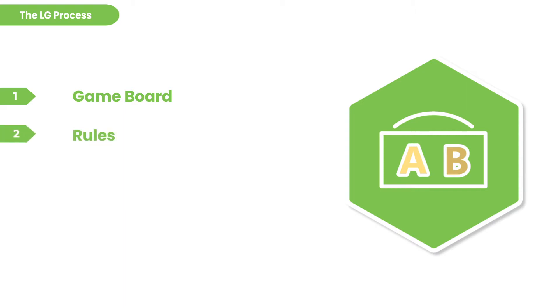What's the game board going to look like that's going to help you create hypotheticals and track the information? Then slowly and carefully, you want to notate the rules in a consistent manner using the same notation each and every time. Then you want to pause and look back through the rules, double check them, make sure you have them correct, and look for connections between them that allow you to make inferences — things that must be true under every circumstance, just based off of the rules. Then you move on to the questions.